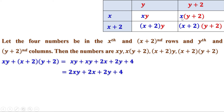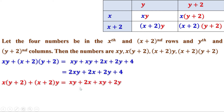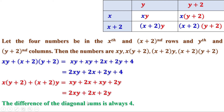Now let us find the other diagonal sum: x into y plus 2 plus x plus 2 into y. x into y is xy, x into 2 is 2x, y into x is xy, y into 2 is 2y. So this equals xy plus 2x plus xy plus 2y, which is 2xy plus 2x plus 2y. Now comparing the two expressions: one is 2xy plus 2x plus 2y, and the other is 2xy plus 2x plus 2y plus 4. Clearly, this is 4 more than this. That is why the difference of the diagonal sums is always 4.